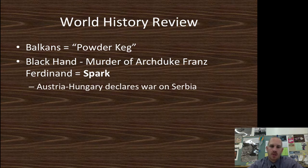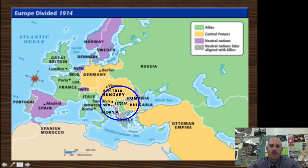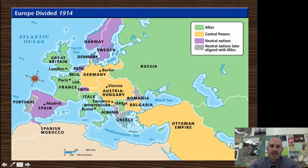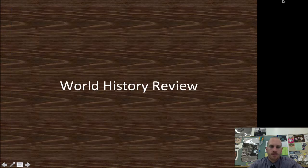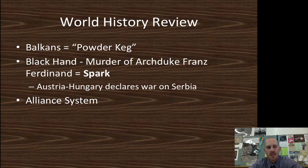Austria-Hungary declares war on Serbia, and that's really all it should have been — Austria-Hungary is much larger and would more than likely have overtaken Serbia. The problem is Russia acts as the big brother to the Serbs and gets involved quickly. It would have been a quick war between just Austria-Hungary and Serbia without the alliance system. The alliance system, supposed to keep countries out of war, in this case pulls all countries into war.